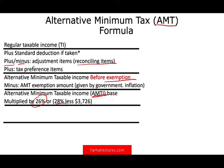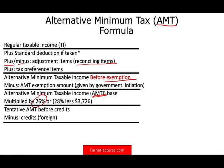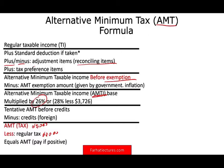For 2020, I believe it's around $194,000 — up to that amount you pay 26%, and above that you pay 28%, less $3,726. That gives your tentative AMT before credit. You are then allowed certain credits, especially the foreign credit. From that you get your AMT tax. Then you compare your AMT to your regular tax — if you paid $60,000 in regular tax and your AMT is $65,000, you pay an additional $5,000.